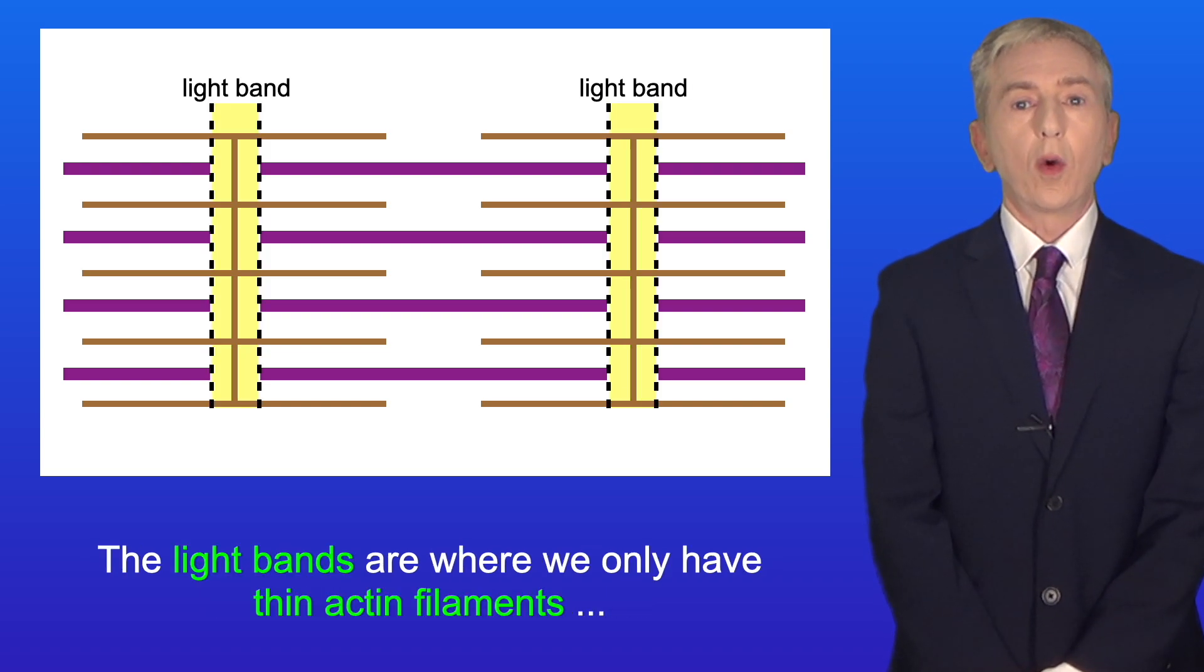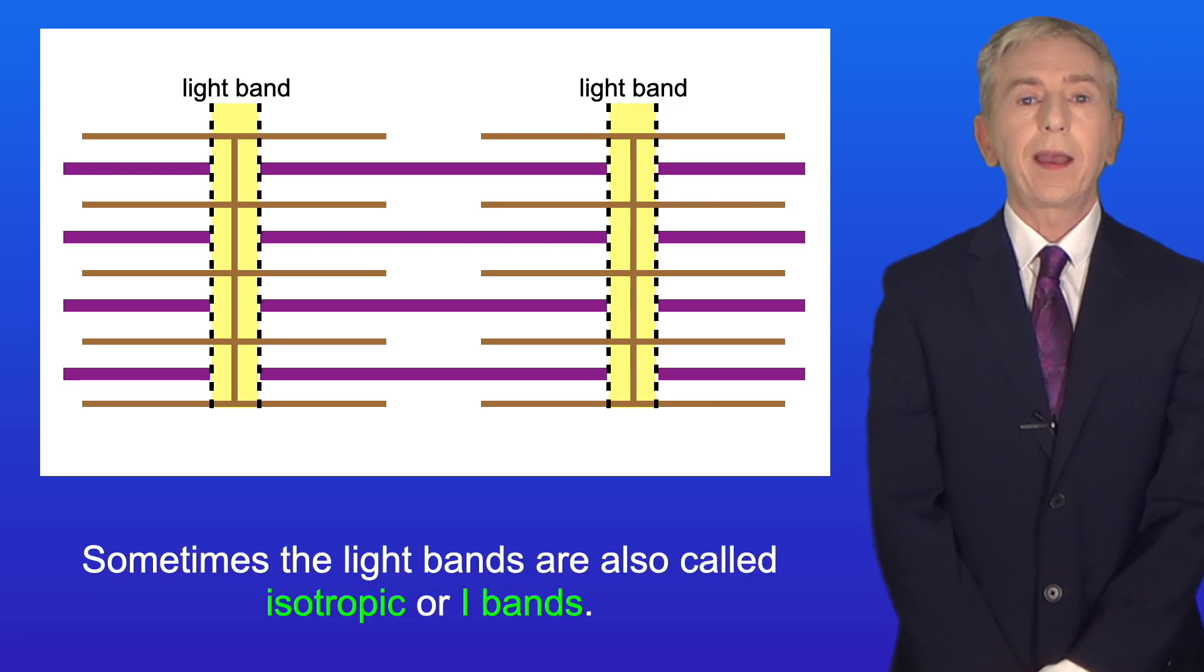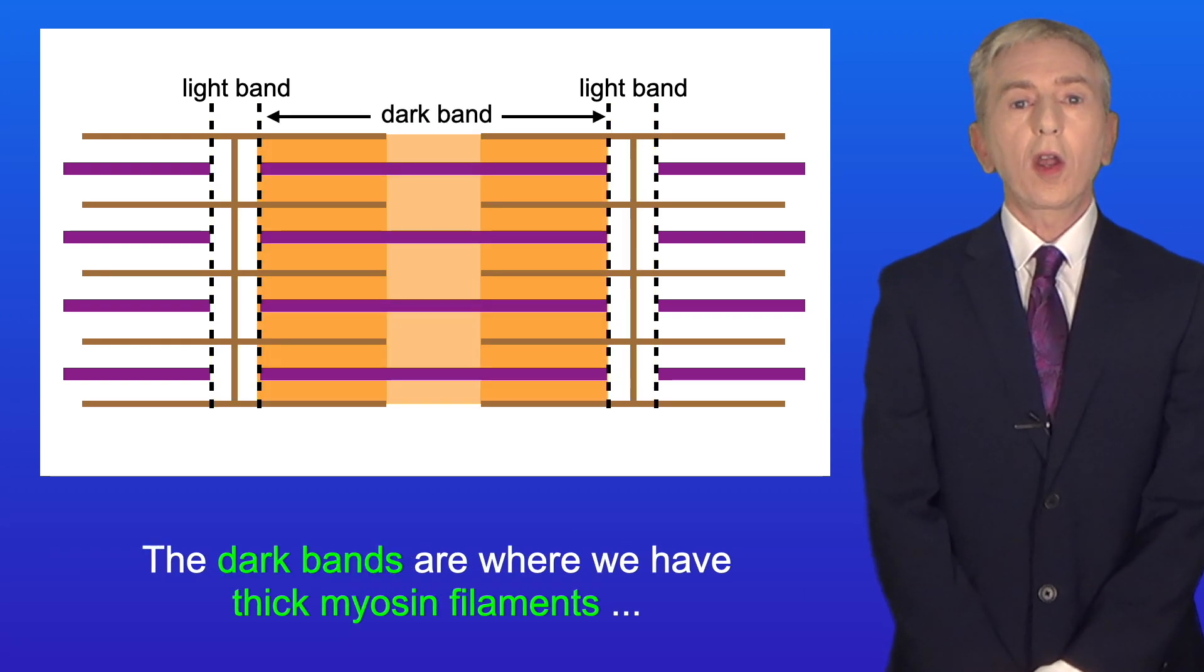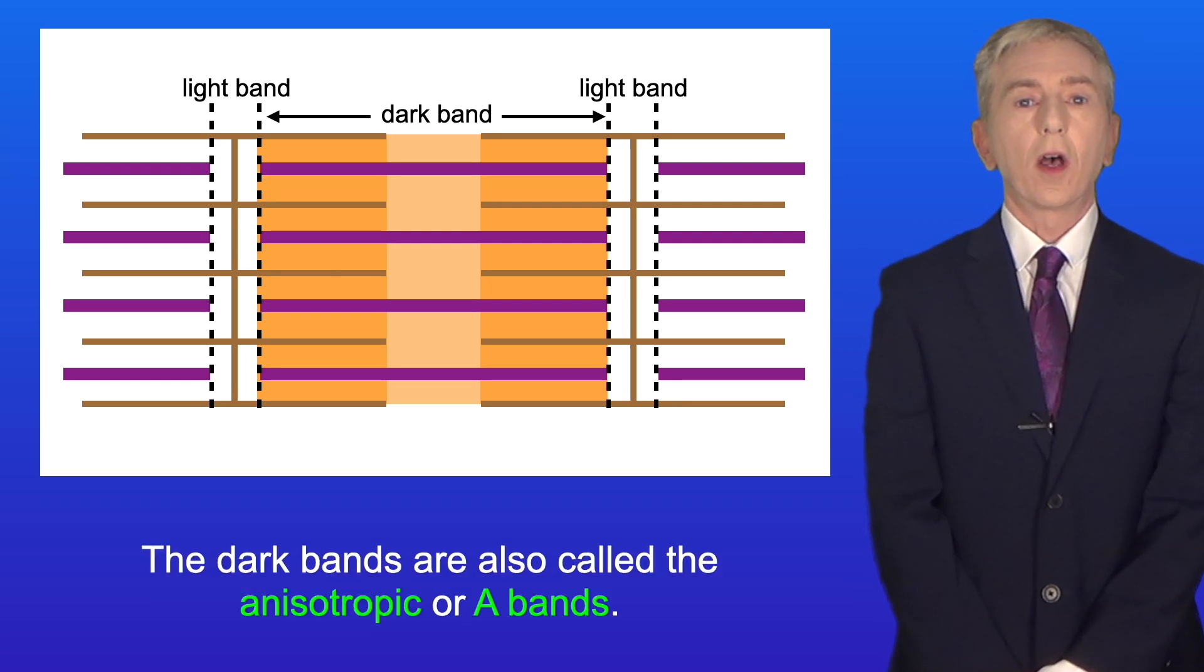The light bands are where we only have thin actin filaments, so this region appears light. Sometimes the light bands are also called isotropic or I bands. The dark bands are where we have thick myosin filaments, so this region appears dark. The dark bands are also called the anisotropic or A bands.